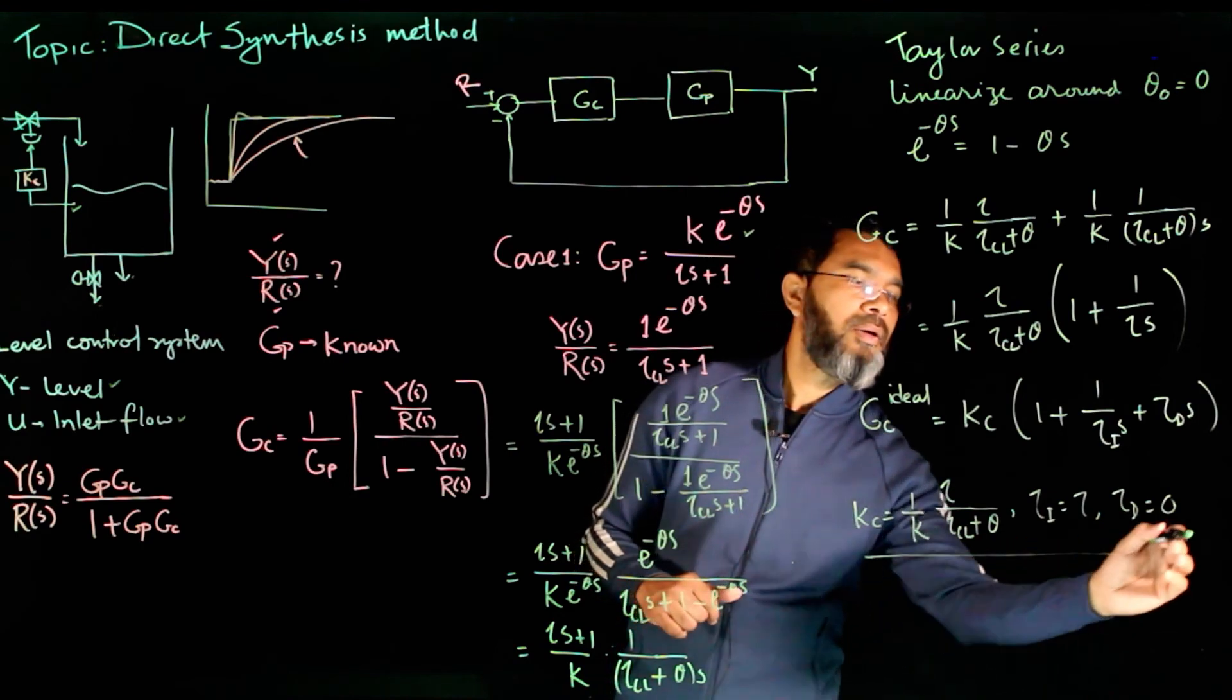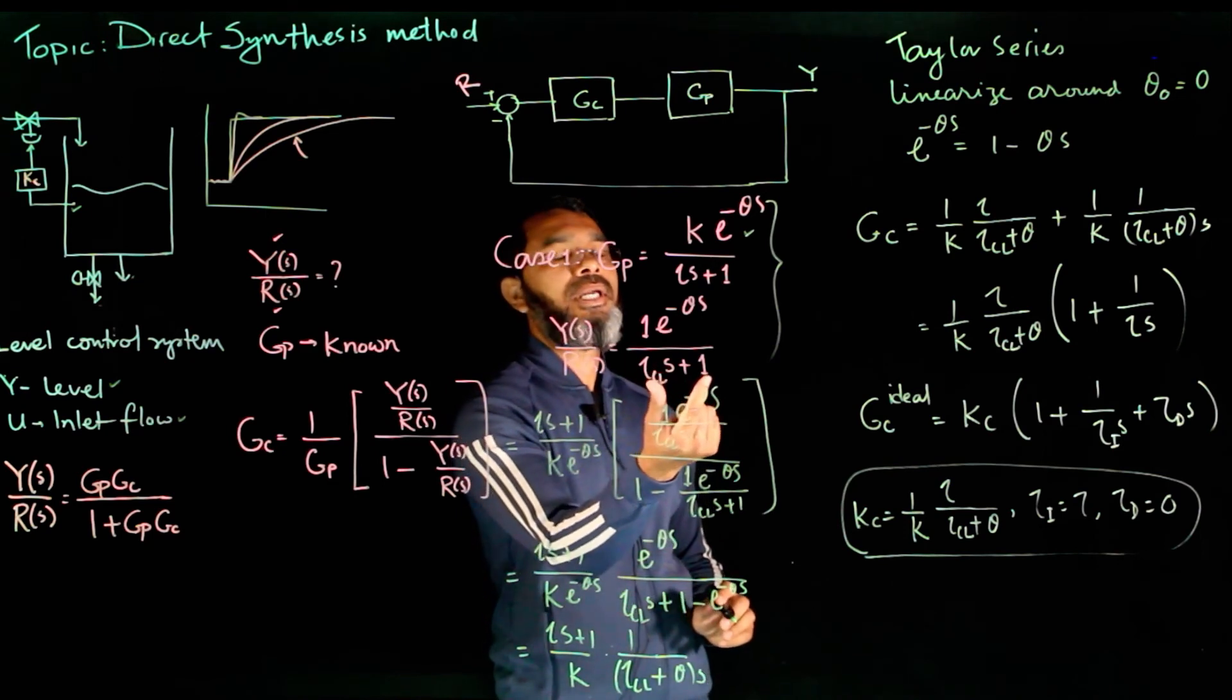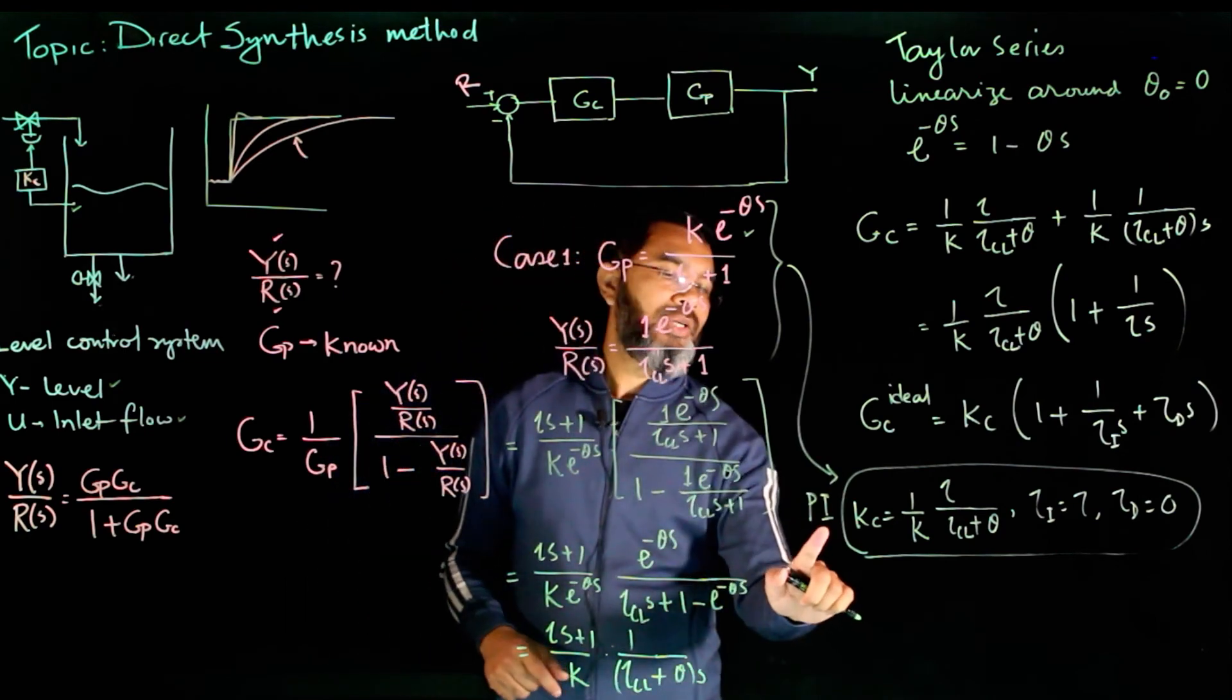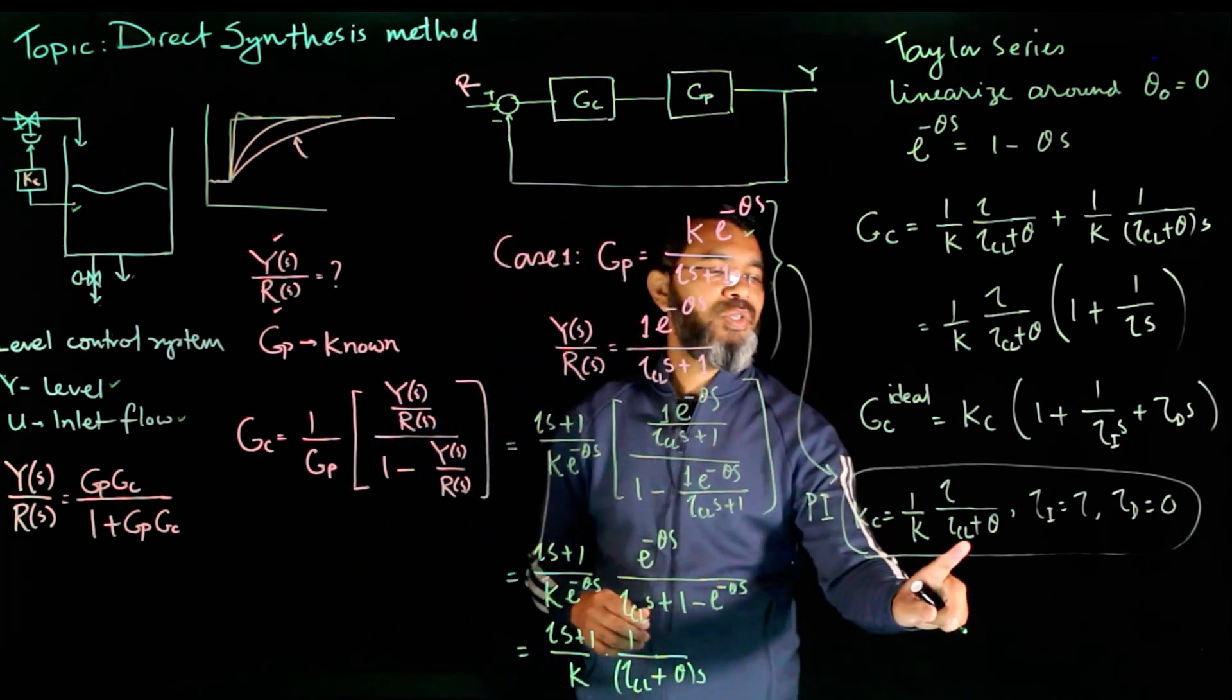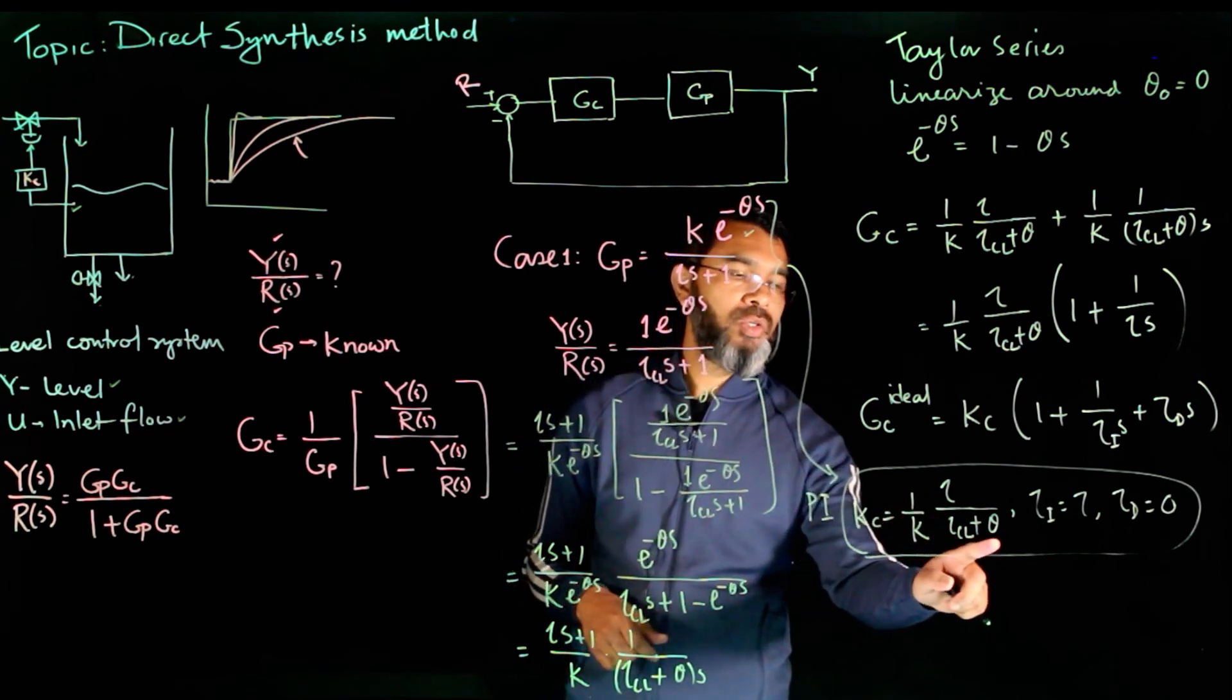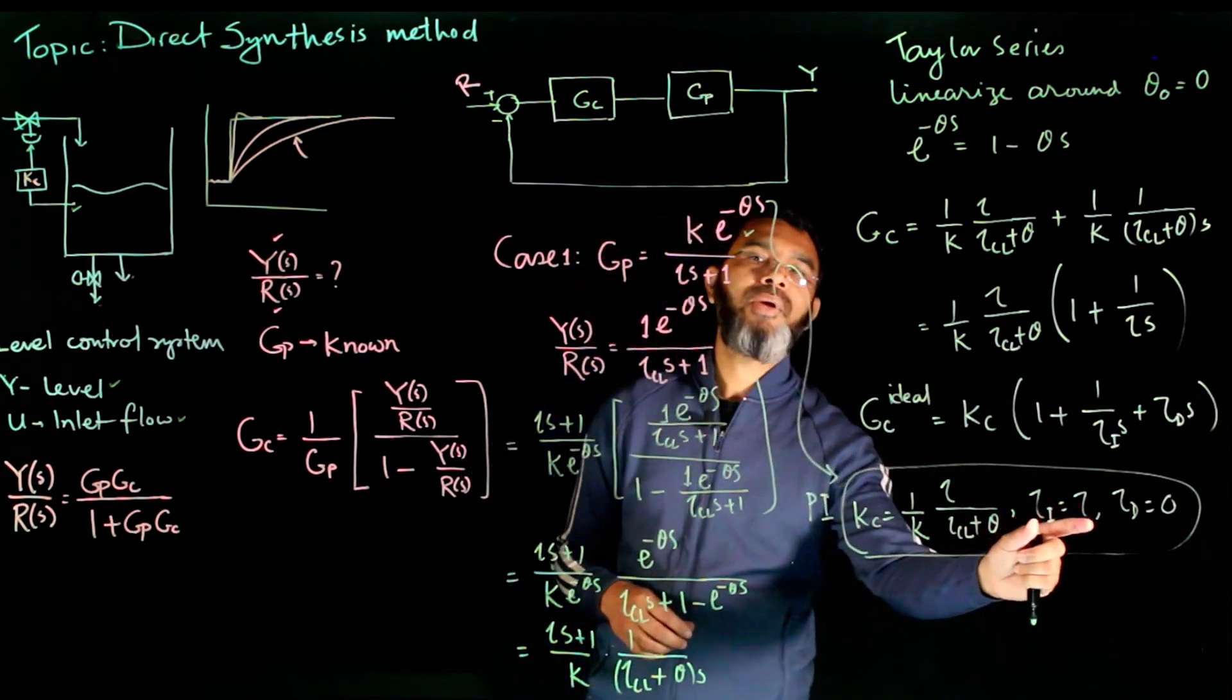So this is our final controller. When there is a process with a time delay and the desired closed loop response is also first order with the same time delay, we'll get a PI controller. The direct synthesis method is giving the structure of the controller along with the controller parameters. Now if you compare this with the first order model without the delay, we saw that Kc was 1/k times τ/τ_cl, meaning there is no theta term. So in this equation, if you plug in the value of theta to be 0, you get exactly the same expression we got for first order model without the delay. And also for that case, τ_I was τ and τ_D was 0, meaning we got a PI controller.